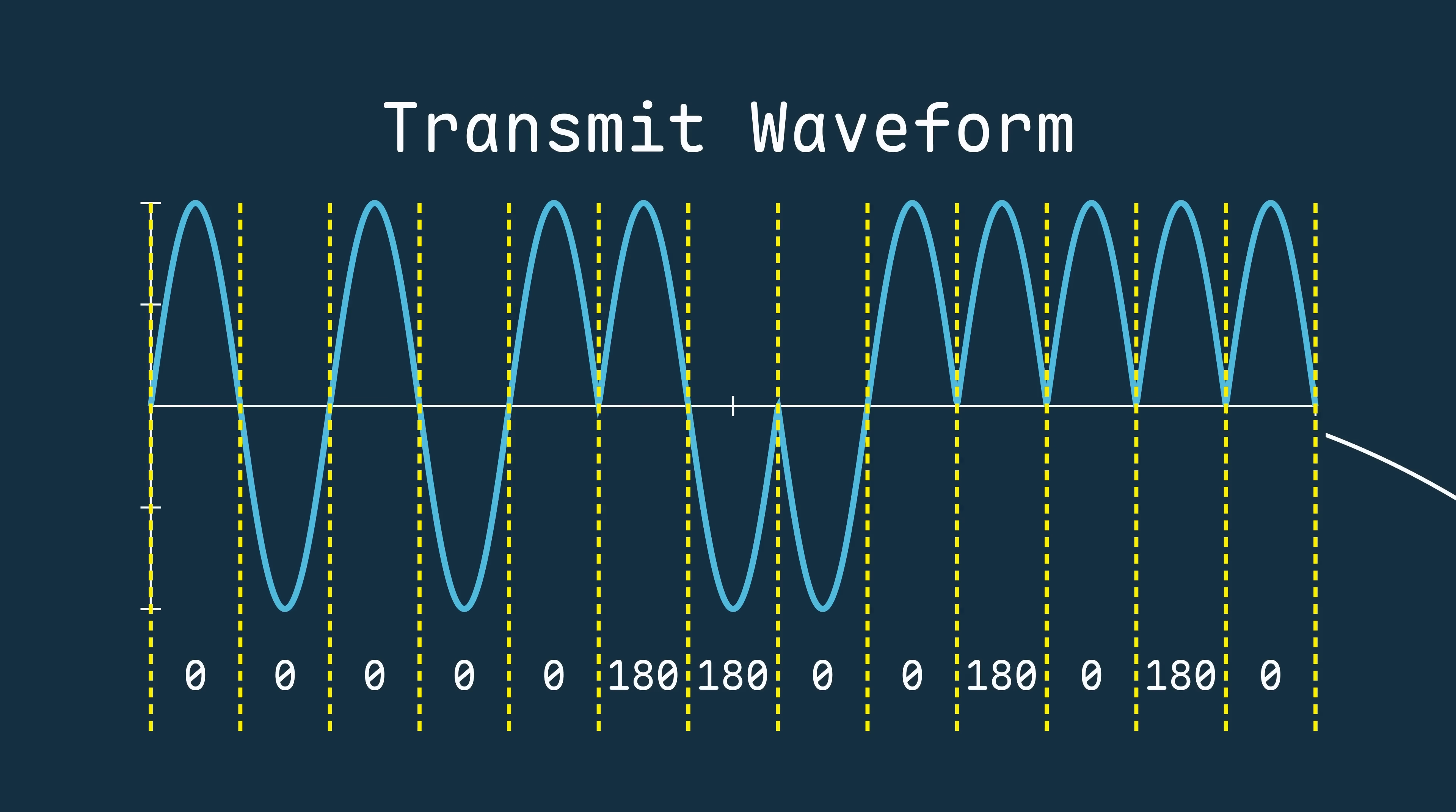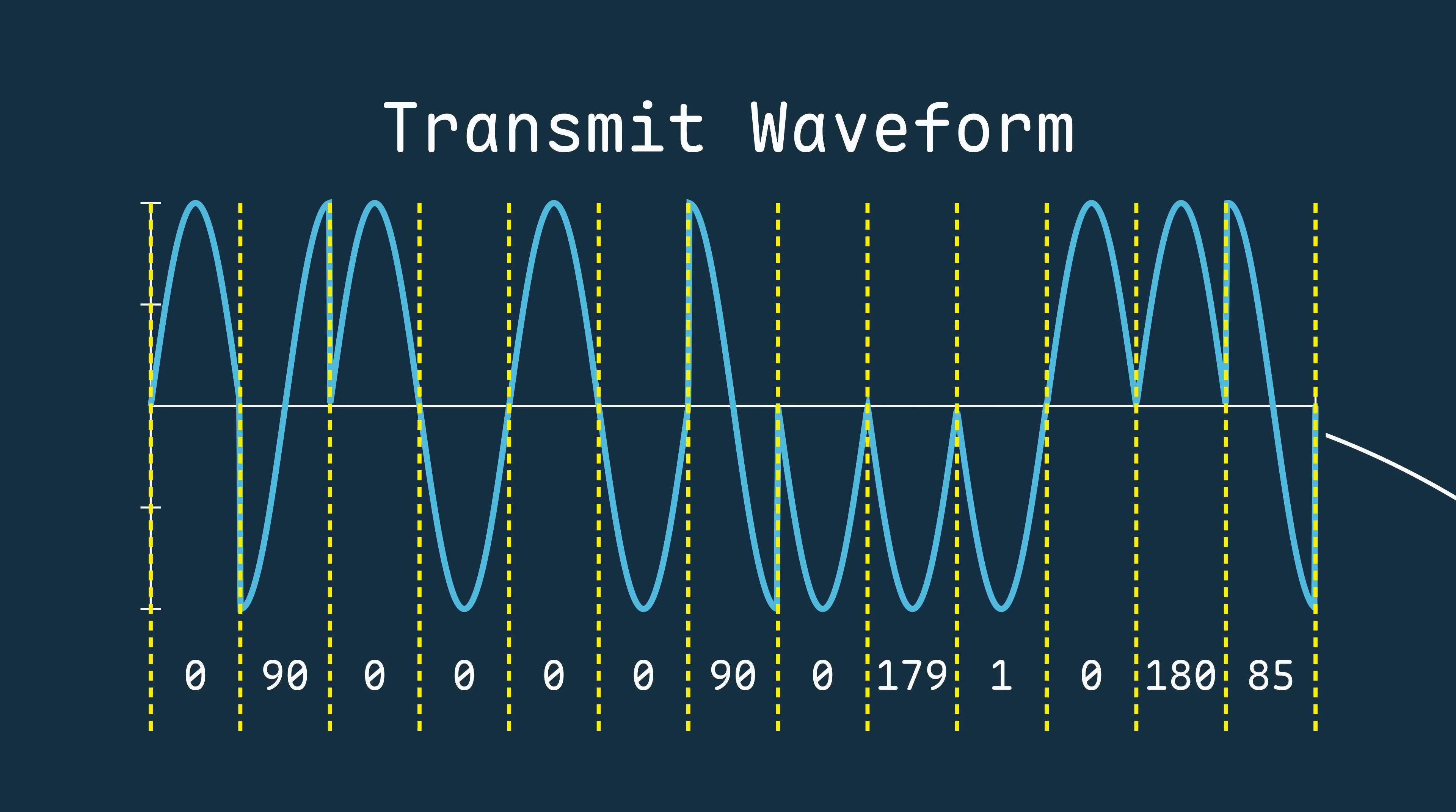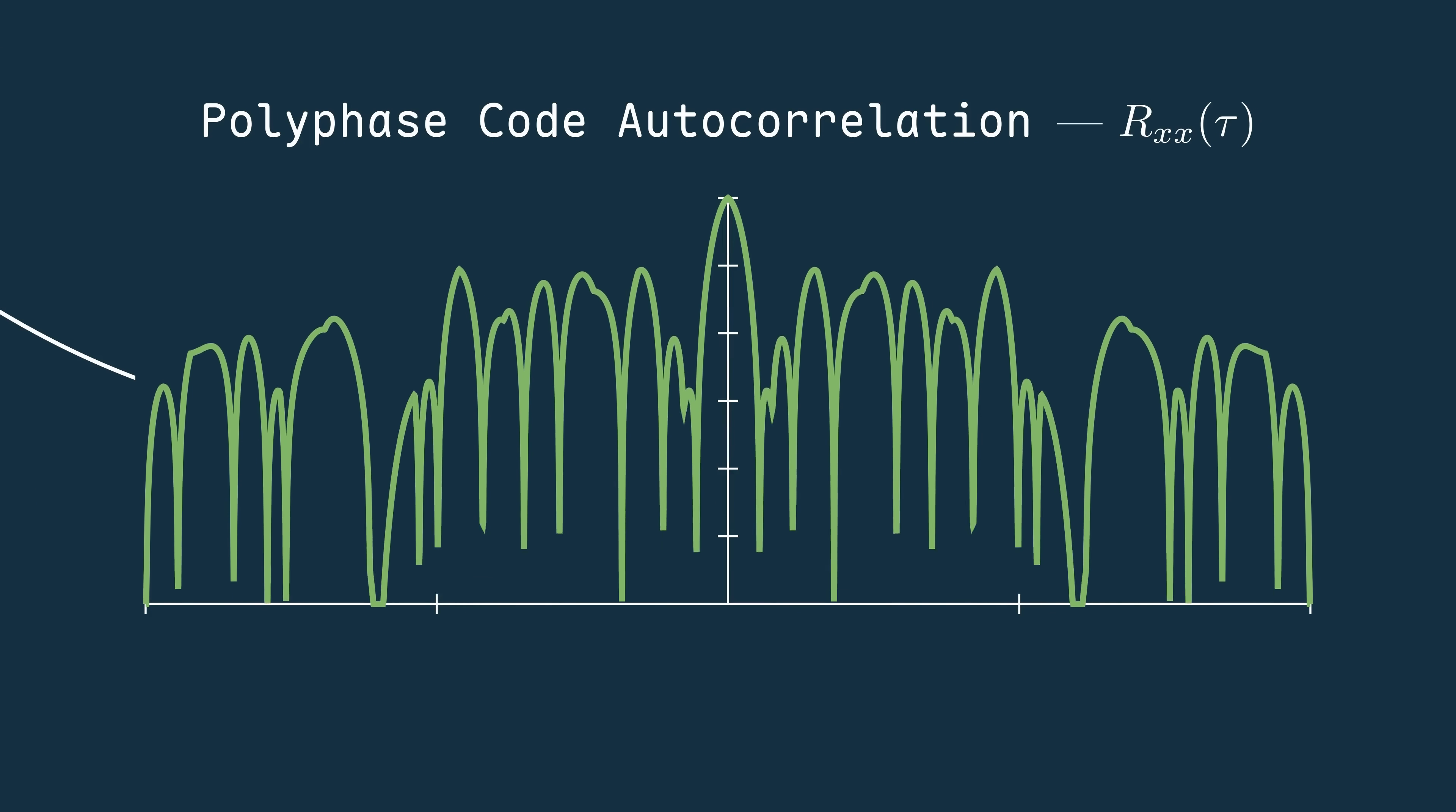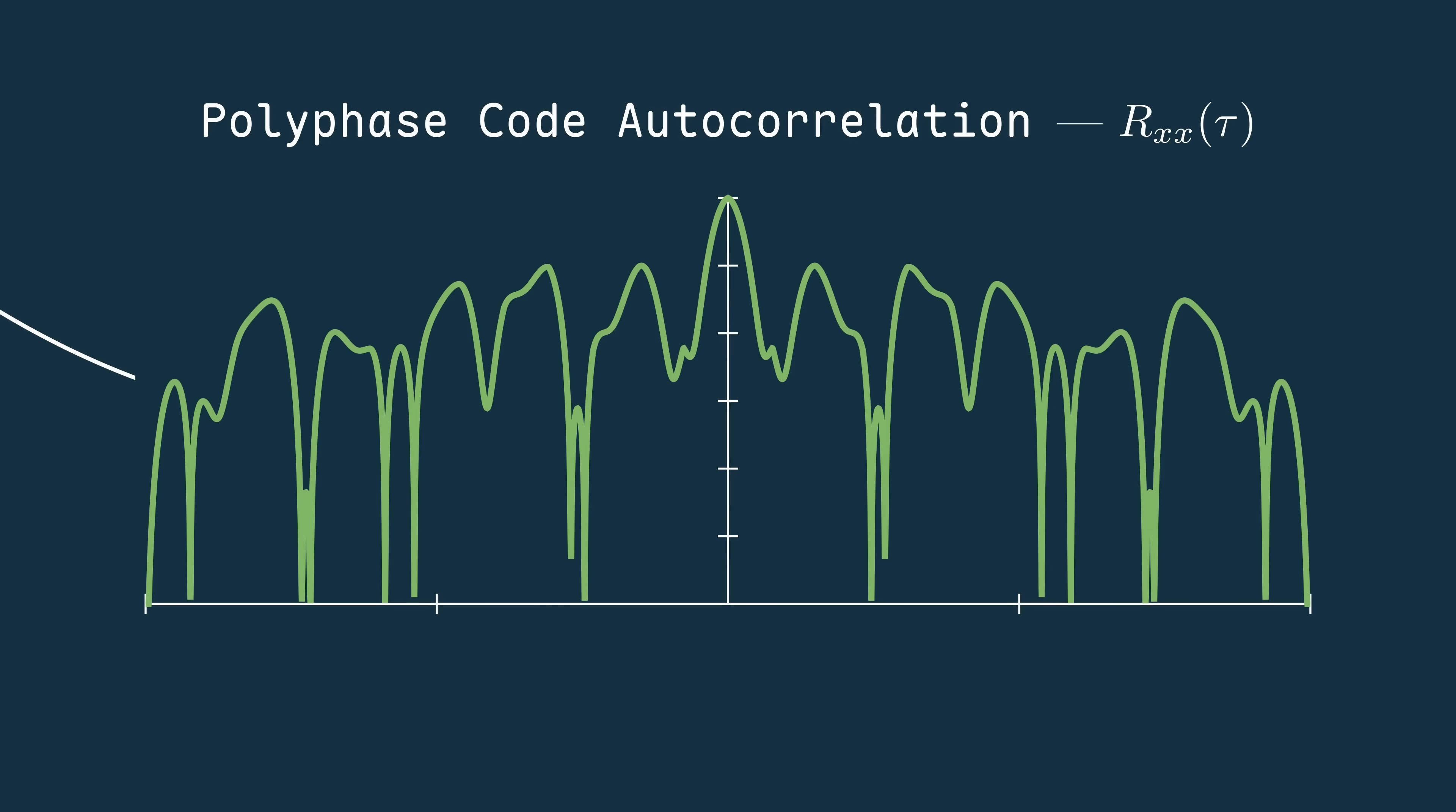There are many other phase coding techniques too, some using polyphase sequences, meaning the phase can take on more than just 0 or 180 degrees, sometimes 90 degree steps or even finer. Each method comes with its own tradeoffs between side lobe level, implementation complexity, and even Doppler tolerance. But I'll save those for a future video.